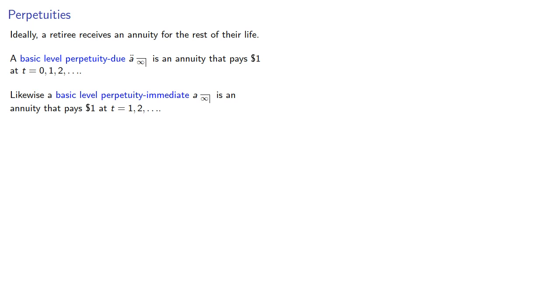Likewise a basic level perpetuity-immediate, a angle infinity, is an annuity that pays one dollar at t equals one, two, and so on forever.